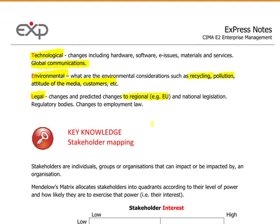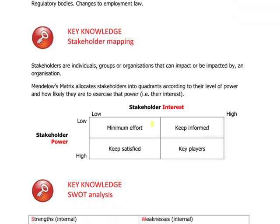Let's go on and look at the next part of this chapter, which is all about stakeholder mapping. Stakeholders are people who have got an interest in the business — individuals, groups, and organisations that can impact or be impacted by an organisation. In other words, they have got an interest in a particular business.